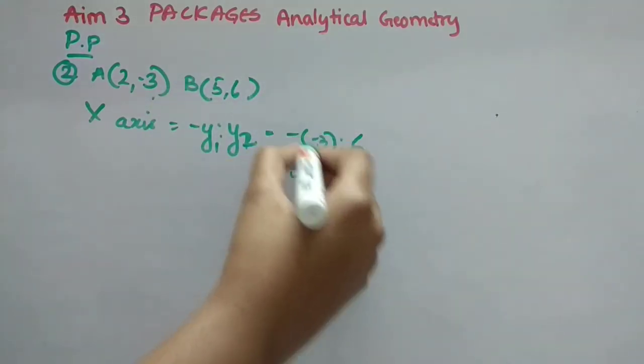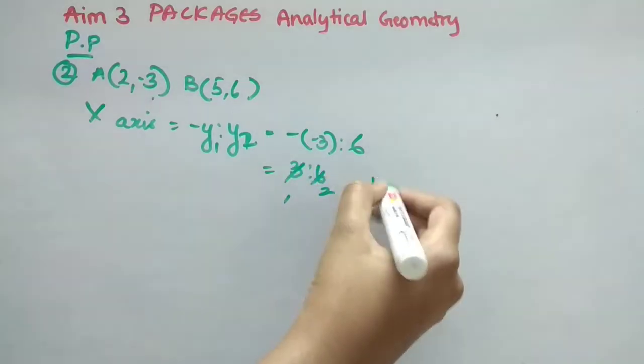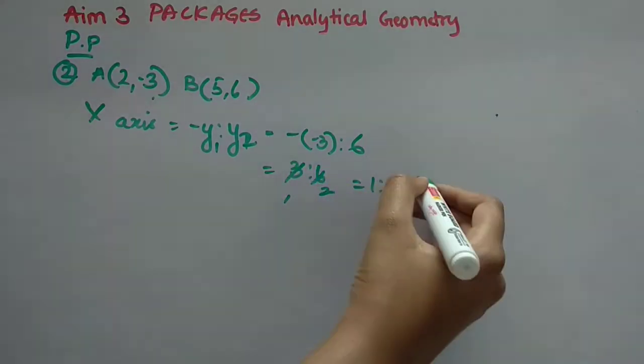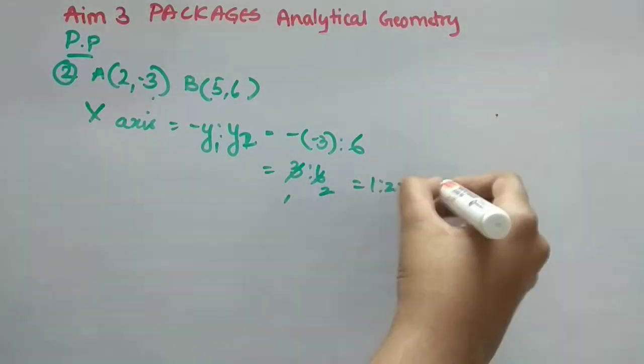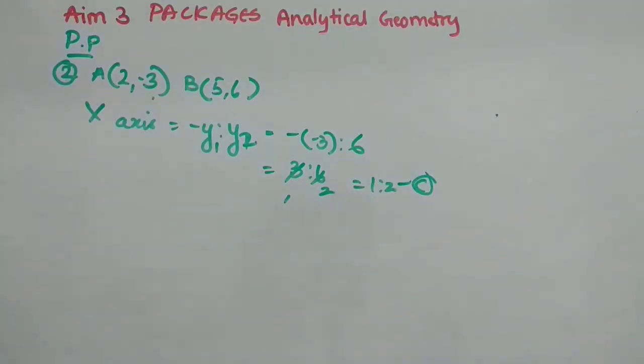So minus of minus 3 is 2 Y2 is 6. So this is plus, right? So minus into minus. So 3 ones are, 3 twos are. So answer is 1 is 2:2 and it is option C. Now we will see third one.